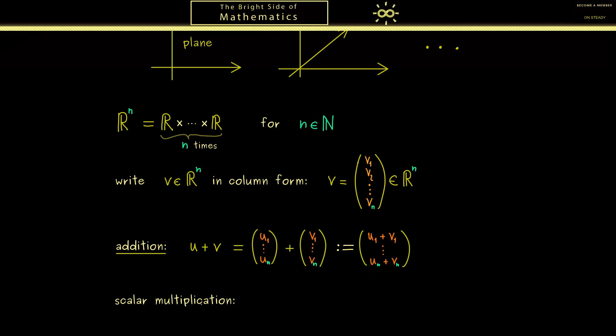Then in the same way we can define the scalar multiplication. There we just multiply a real number, a scalar we call lambda, with a vector u. And as before, the only meaningful definition would be to multiply each component separately. Therefore, this is our resulting vector with n components again.